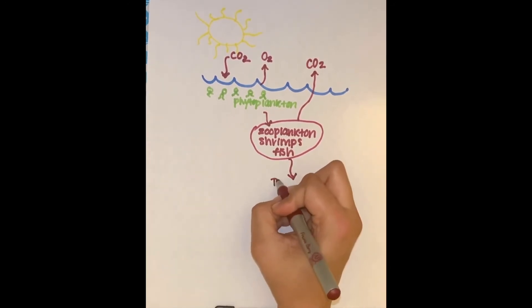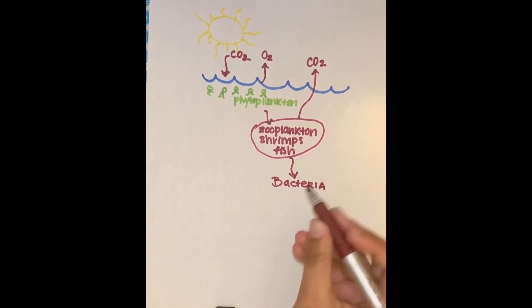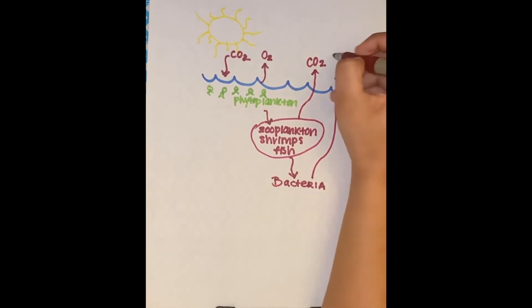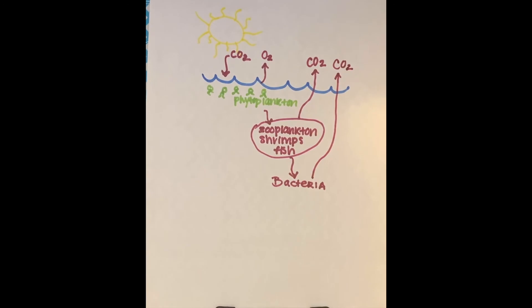When phytoplankton die or larger organisms like fish release fecal pellets that drift to the bottom of the ocean, bacteria start to decompose them. This bacteria releases carbon dioxide back into the atmosphere as a byproduct, completing the biological pump.